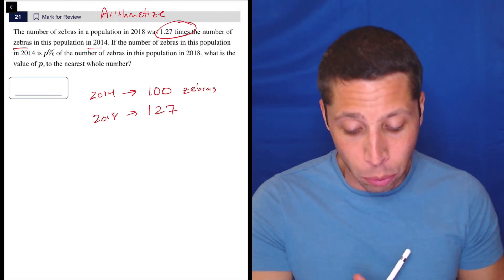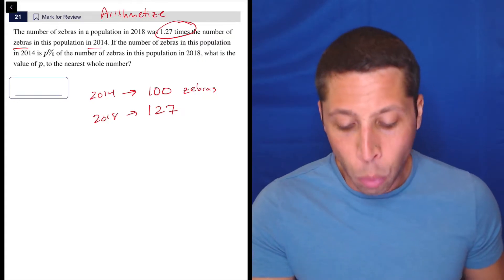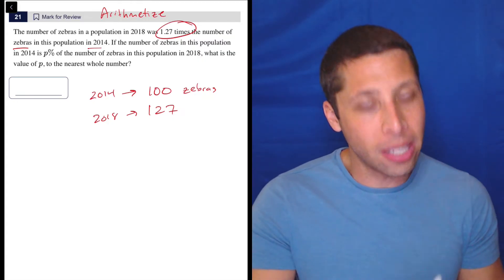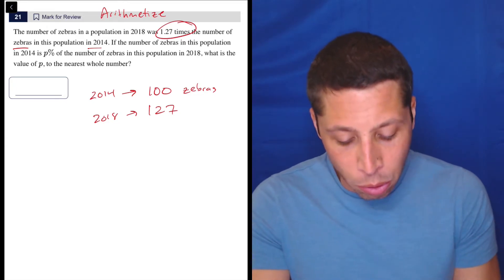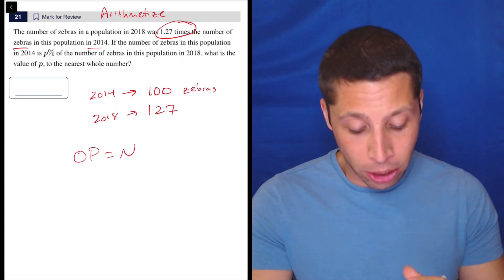If the number of zebras in this population in 2014 is p percent of the number of zebras in this population in 2018, what is the value of p? So this is where, even with this arithmetized strategy, we might mess it up. So what we need to do is we need to use the open formula, and I have a whole lesson on this. It's really good.